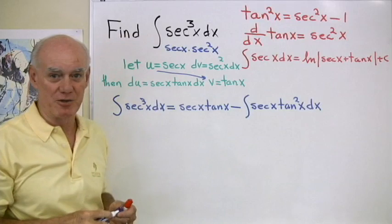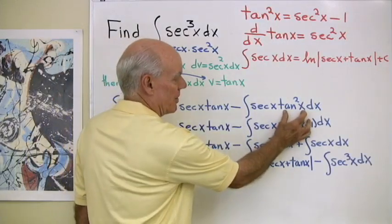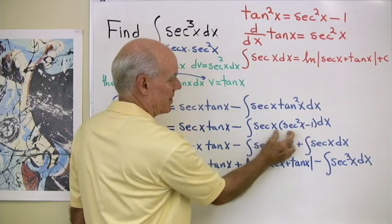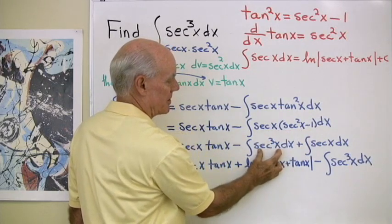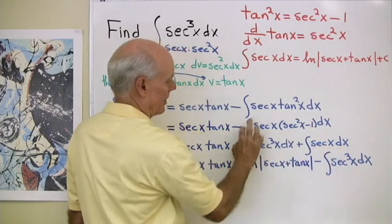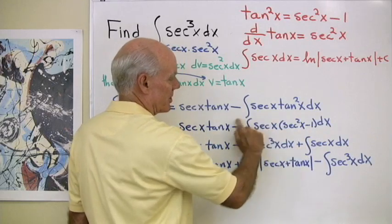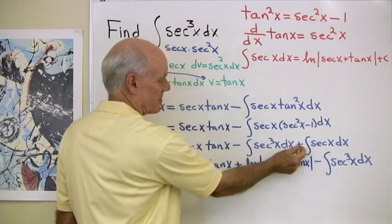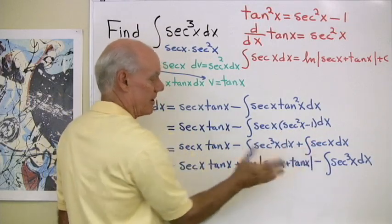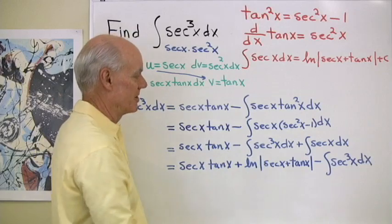I make that substitution: tangent squared equals secant squared minus 1. Then I multiply secant times secant squared and get secant cubed, and secant times 1 is secant. I treat each as separate integrals and distribute the negative sign across — that's why that term becomes plus. So I've multiplied out using the Pythagorean identity. It looks like things are getting worse, but they're actually not.